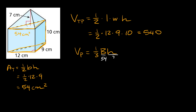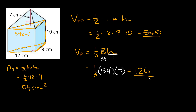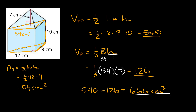So the volume of this pyramid is equal to one-third times 54 times 7, which equals 126. Now, in order to find the total volume, we just add our two volumes together: 540 plus 126 equals 666 centimeters cubed. Spooky.